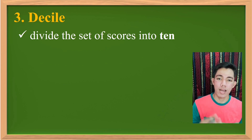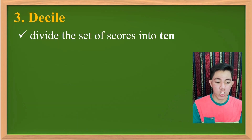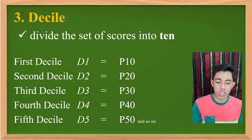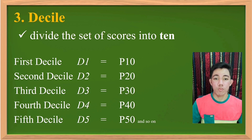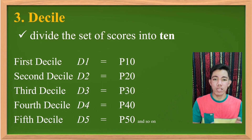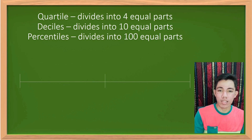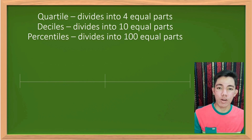Now let's proceed to decile. When we say decile, you divide it by 10 — you divide the set of scores into 10 parts. The first decile is equivalent to the 10th percentile, the second decile is equivalent to the 28th percentile, and the third decile is equivalent to the 38th percentile, and so on. So to summarize: quartile divides by 4, percentile divides by 100, and decile divides by 10.